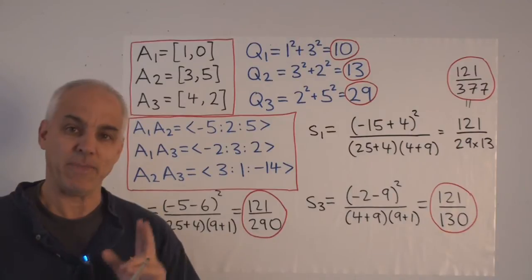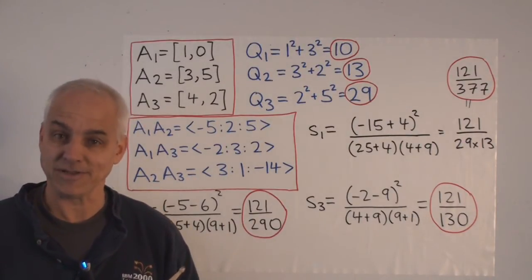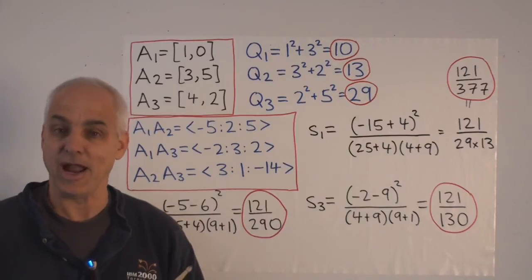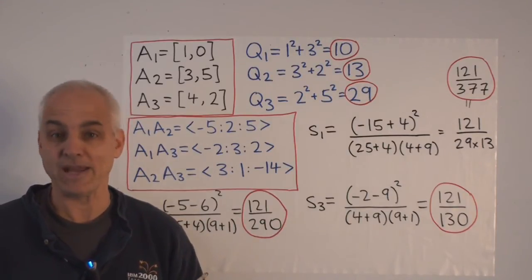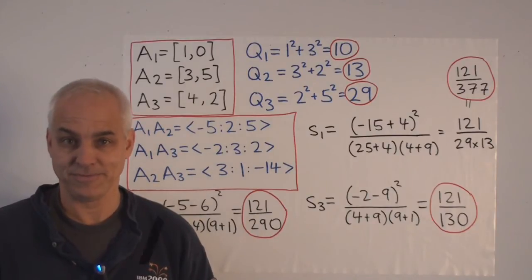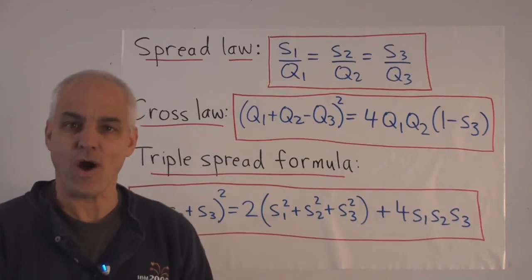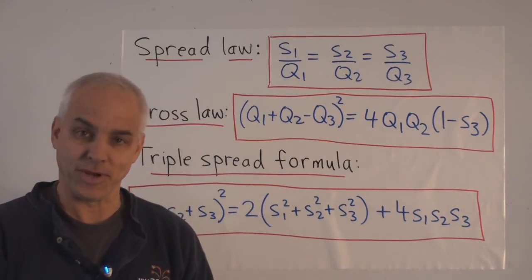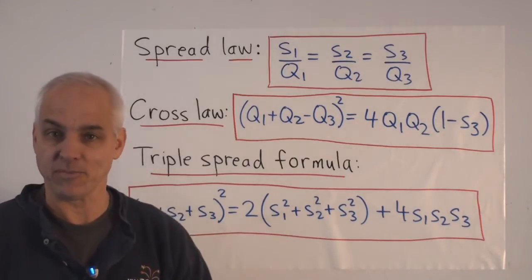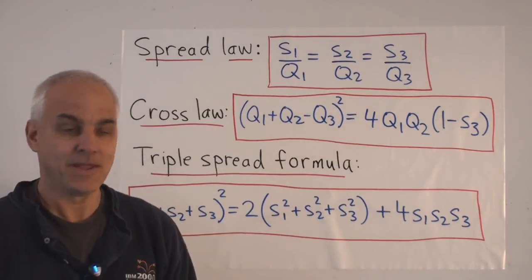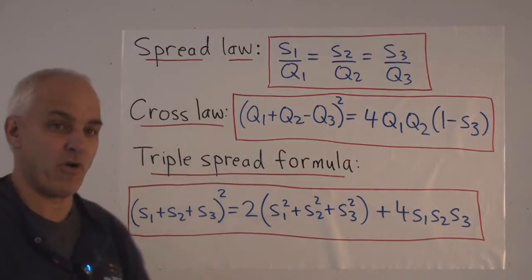Now let's get to the main laws of trigonometry. There are five. Two of them we've already talked about: Pythagoras's theorem and the triple quad formula. The other three main laws concern a general triangle with quadrances q1, q2, q3 and spreads s1, s2, s3. They are: the spread law, the cross law, and the triple spread formula — laws that connect these six numbers to each other.